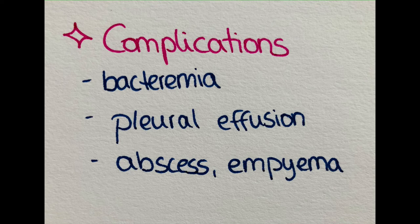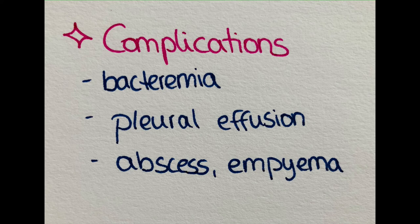This infection can lead to different complications. One is bacteremia, where bacteria find their way through capillaries into the general blood circulation, potentially reaching other sites. This can lead to bacteremic dissemination into the brain, heart valves, pericardium, kidneys, spleen, and joints, causing meningitis, endocarditis, and other extrapulmonary complications. Within the lung, it can lead to abscess formation, empyema, organization of fibrin strands connecting alveolar structures, and pleural effusion — a collection of fluid outside the lungs within the pleural space.